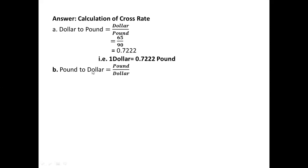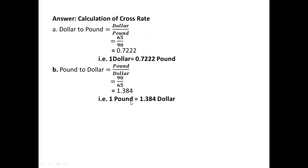Then, (b) Pound to Dollar — the formula will become: Pound divided by Dollar. When we find Pound to Dollar, the formula becomes Pound divided by Dollar. The Pound is 90 and Dollar is 65. The answer is 1.384. That means Pound to Dollar: one Pound equals to 1.384 Dollar.